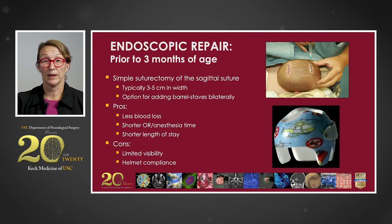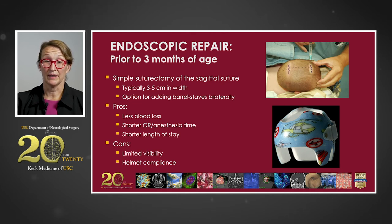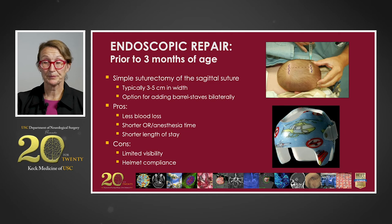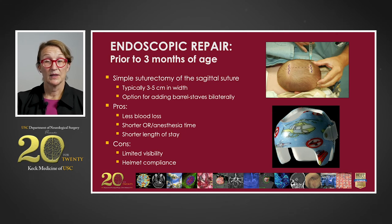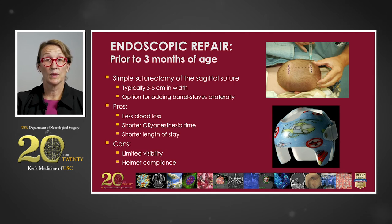This is an example of an endoscopic repair, typically done prior to three months of age. It's a simple suturectomy of the sagittal suture, with the width of the suture removed being approximately three to five centimeters, with an option for adding barrel stave osteotomies bilaterally. The advantages are less blood loss, shorter operative time, less anesthesia time, and a shorter length of stay. The drawbacks include limited visibility and required helmet compliance postoperatively for six to 12 months. The picture on the right demonstrates the two small incisions made on the cranium, and the second picture shows a typical cranial molding helmet orthosis worn by children postoperatively.